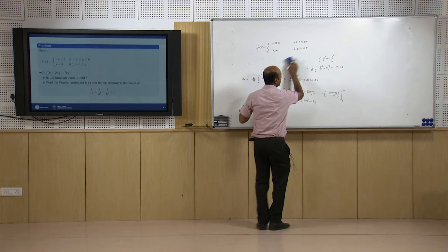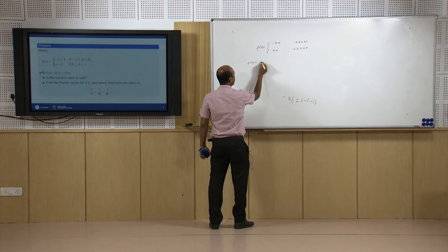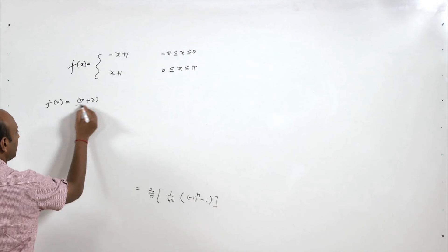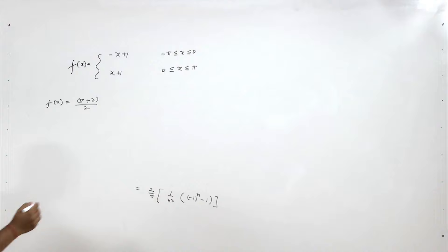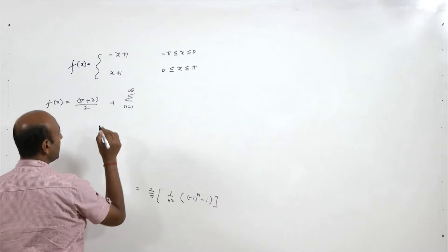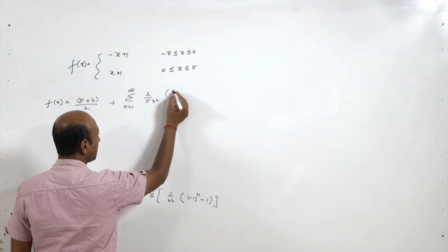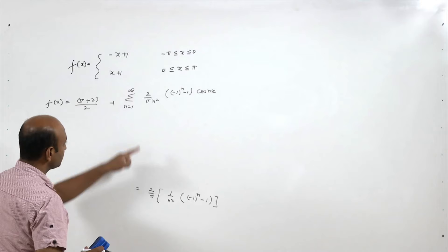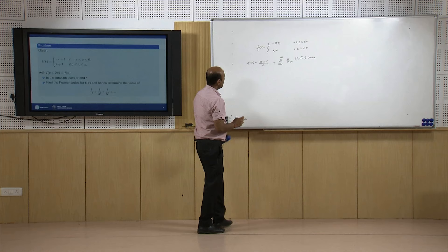So the Fourier series representation of this function is: f(x) = a₀/2 + Σ aₙ cos(nx), where a₀ = π + 2 and aₙ = (2/πn²)((-1)ⁿ - 1).